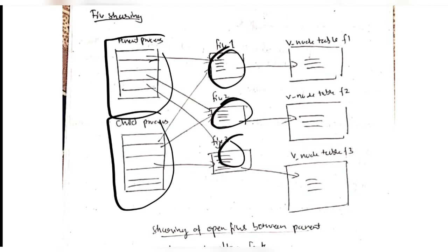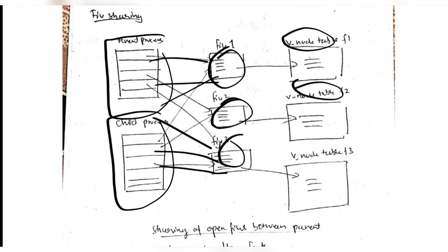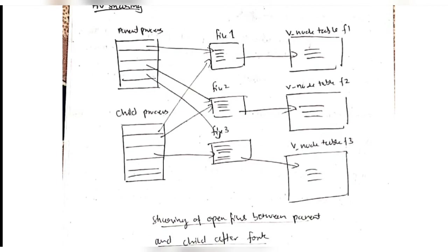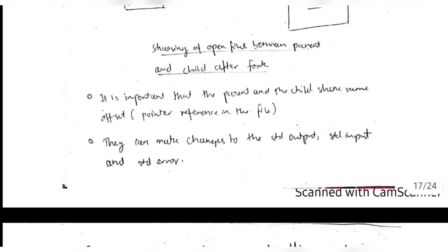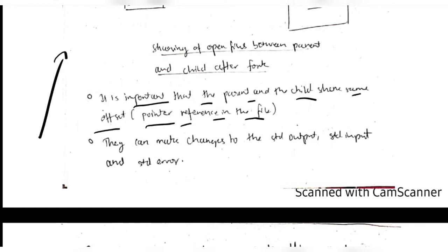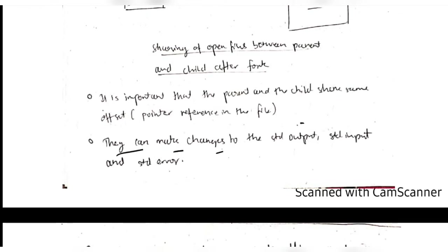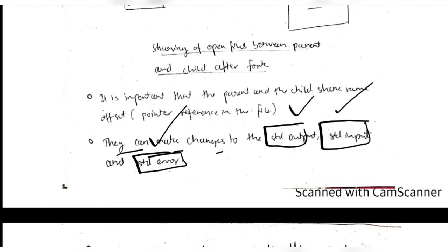File sharing in fork: the parent process and child process will access the same files because it's the same process. Each one will have a v-node table provided by the kernel which keeps all data used - it acts as a cache, making file sharing more efficient. A key point: it is important that the parent and the child share the same offset, meaning the same pointer reference in the file. If they point to different places, conflicts can happen. They can only make changes to standard output, standard input, and standard error.